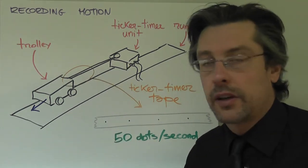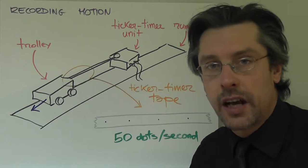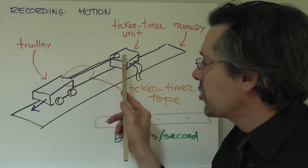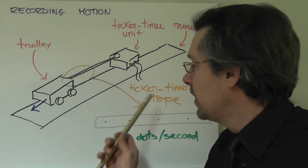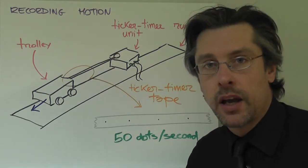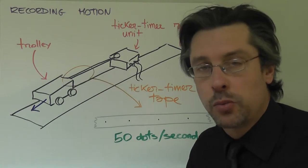We will have a box here which is called the ticker timer unit and attached to it there is a piece of carbon tape which is called ticker timer tape. What is the usefulness of this? How does it work?